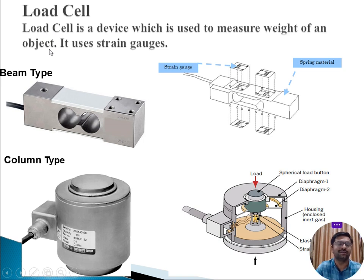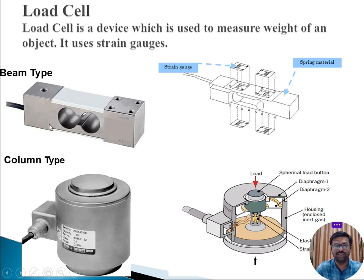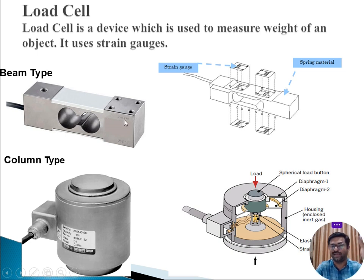There are two types of load cells: beam type and column type. In the beam type of load cell, one end is connected to a rigid support and the other end is kept hanging, where the force to be measured is applied.